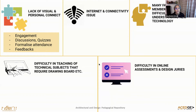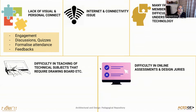Do you think the strength of the batch should be reduced and smaller sections be created? 70% say yes, 17% say no, 13% say I'm not sure. Should half the batch attend college and another half attend online classes with roles reversed? 63% say yes, 20% say no, and 17% say I'm not sure. Should students have the choice to continue digitally? 74% say yes, 15% say no, and 11% say I'm not sure.